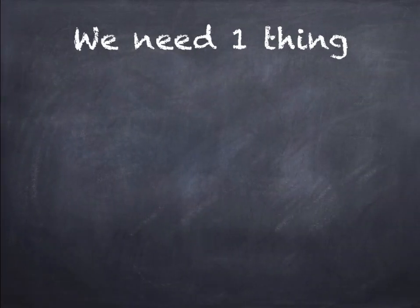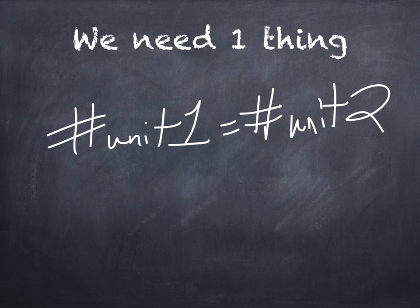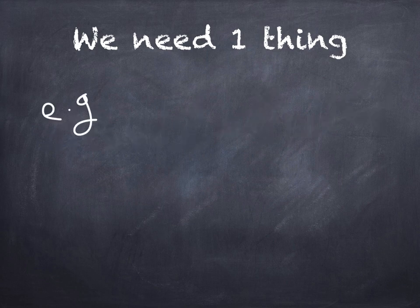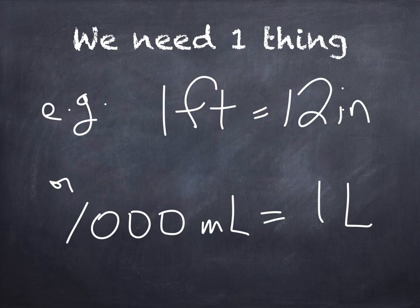In order to do any conversion, we need one thing. And that is something that's definitive that says a certain amount of this unit is equal to a certain amount of that unit. Examples of this would be that one foot equals 12 inches or a thousand milliliters equals one liter. We need that fact to do any conversion. And the thing about this is that these numbers don't change. One foot by definition equals 12 inches. A thousand milliliters by definition equals one liter. So that ratio or that relationship is always the same regardless of how we're going to use that relationship.